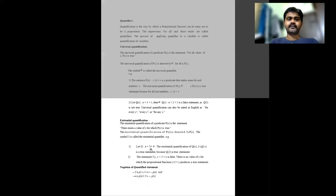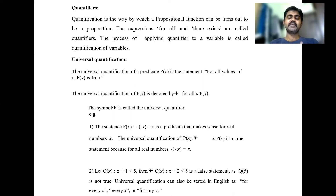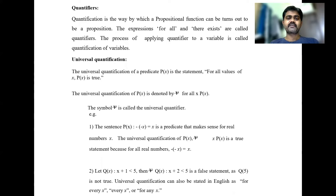The next important topic is the quantifier. Quantification is the way by which a propositional function can be turned into a proposition. The expressions 'for all' and 'there exists' are called quantifiers. We should mainly focus on two quantifiers: universal quantification and existential quantification.